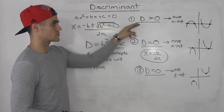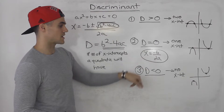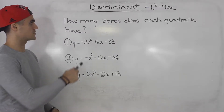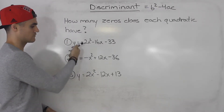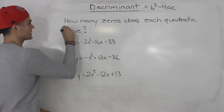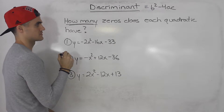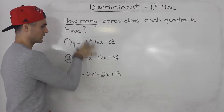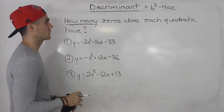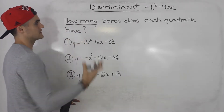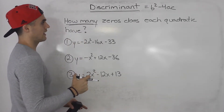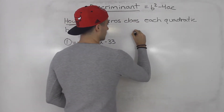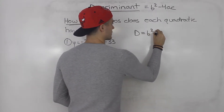So those are the three different cases for the discriminant: greater than zero means two x-intercepts, equal to zero means one x-intercept, less than zero means no x-intercepts. Now knowing what the discriminant is, let's do some examples. We're asked how many zeros does each quadratic have — not what are the zeros. If they were asking what the zeros are, we'd have to factor or use the quadratic formula. But since they're asking how many, we can just use the discriminant, D equals b squared minus 4ac.